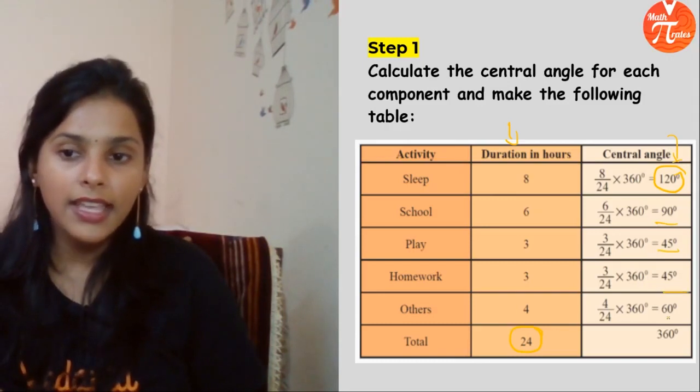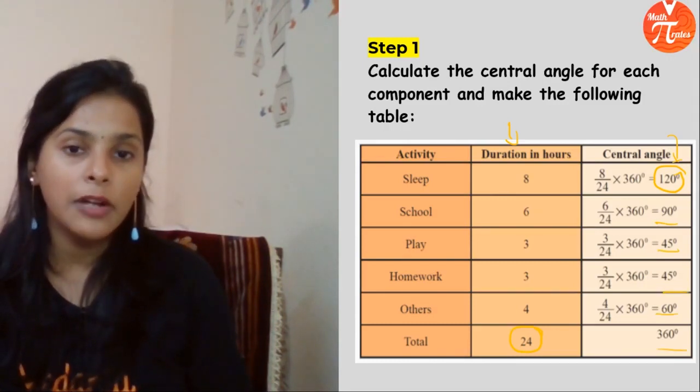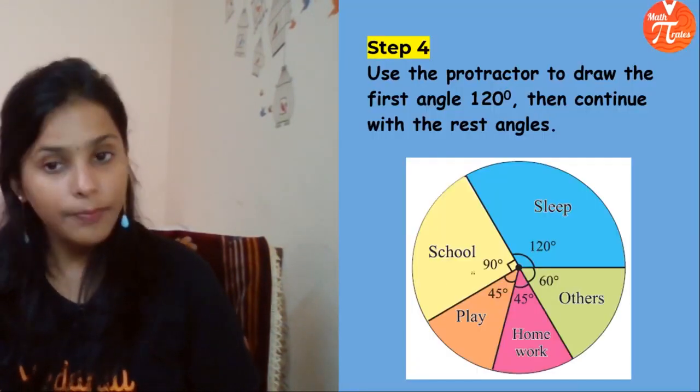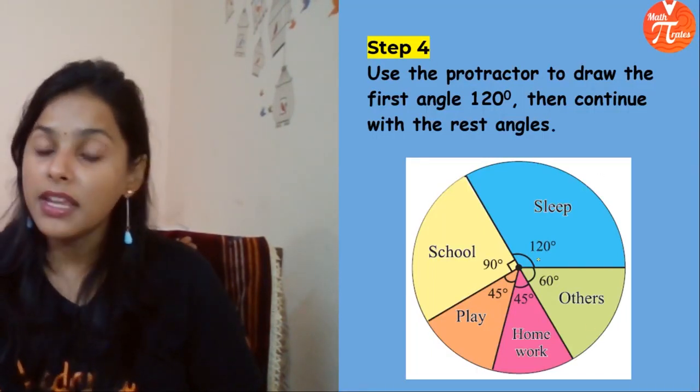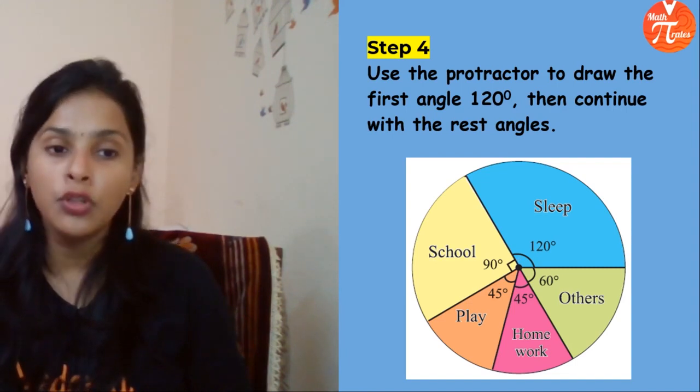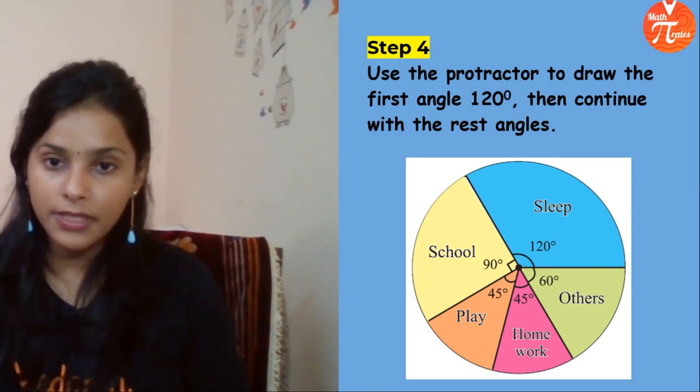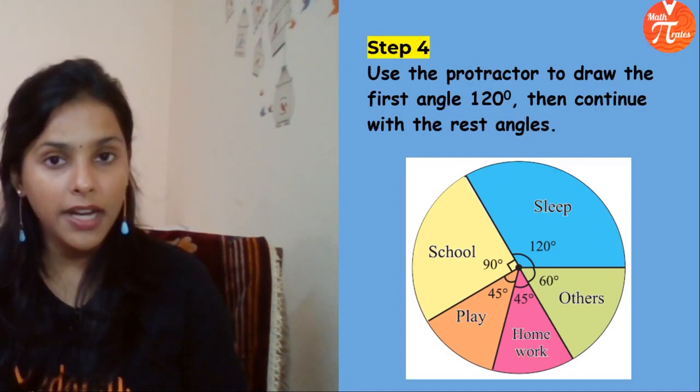You have taken all the formulas. Now this is the turn to make the pie chart. You draw a circle, and after making the circle, start making the angles according to your choice with protractor's help.